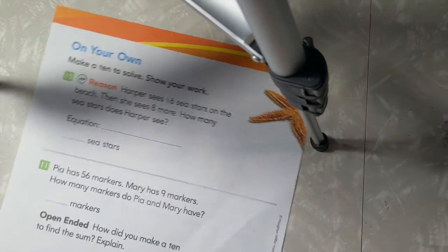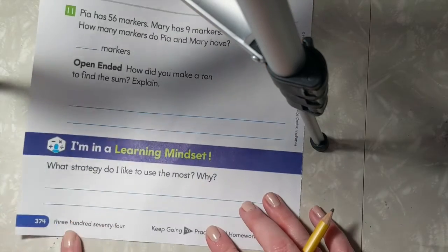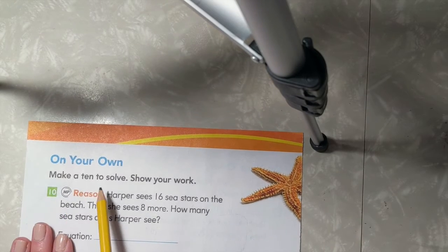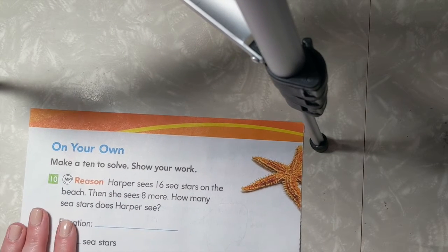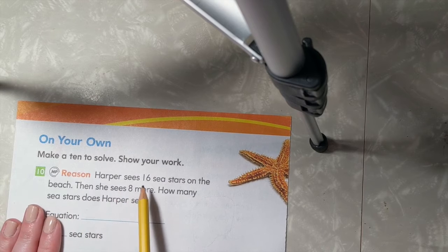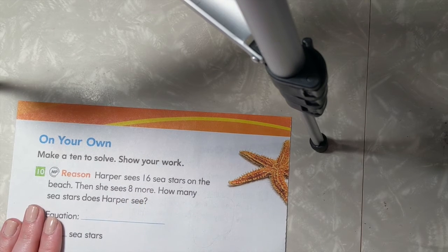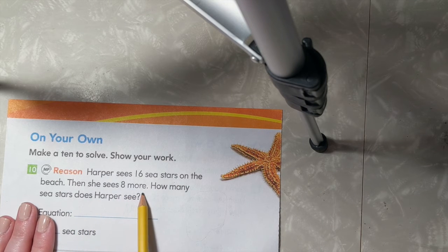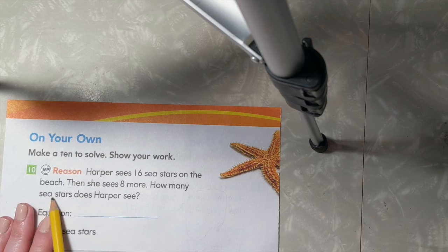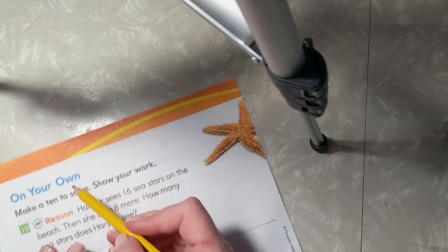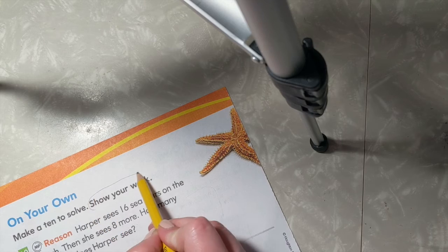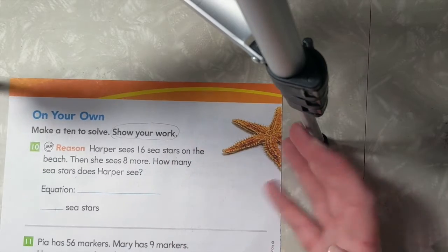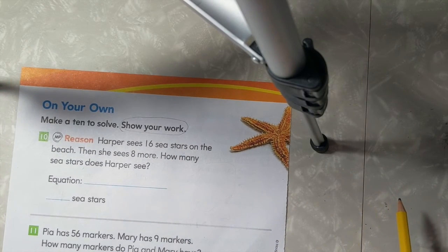Let's go ahead and turn to the next page. This is page 374. Make a 10 to solve. Show your work. Number 10. Harper sees 16 sea stars or starfish on the beach. Then she sees 8 more. How many sea stars does Harper see? Here's our important words right here. Show your work. I'd like if you would draw a picture to show your work so that I can make sure that you're doing the work correctly.